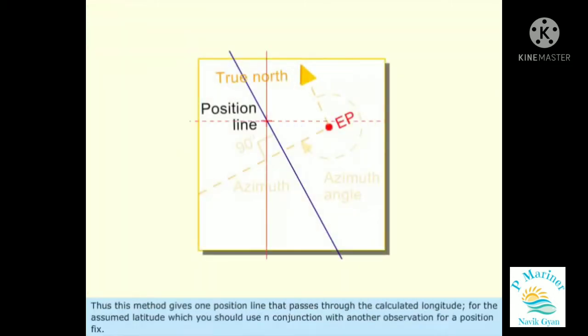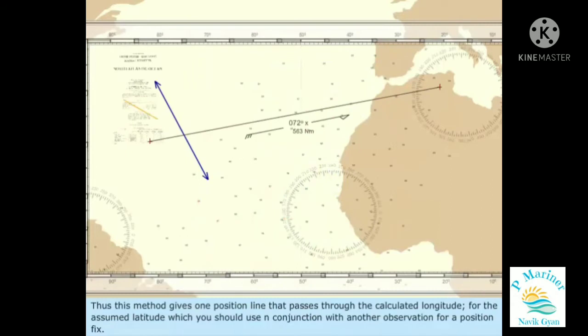This method gives one position line that passes through the calculated longitude for the assumed latitude, which you should use in conjunction with another observation for a position fix.